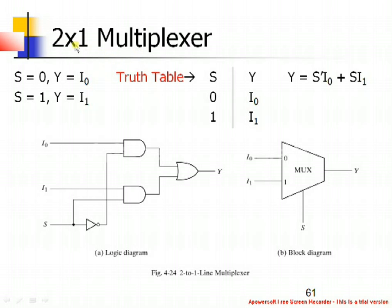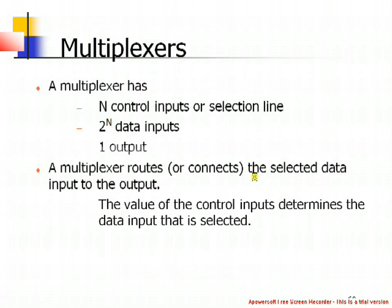The 2-to-1 designation indicates that it has two inputs. This multiplexer can receive two inputs and produces only one output. As there are two inputs, it means 2^N where N equals 1. So 2^1 equals 2 inputs, and since N is 1, there is only one selection line. Based on this control line, one of the inputs is selected and routed to the output.